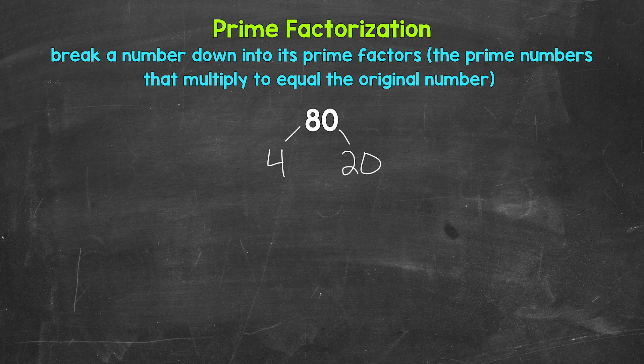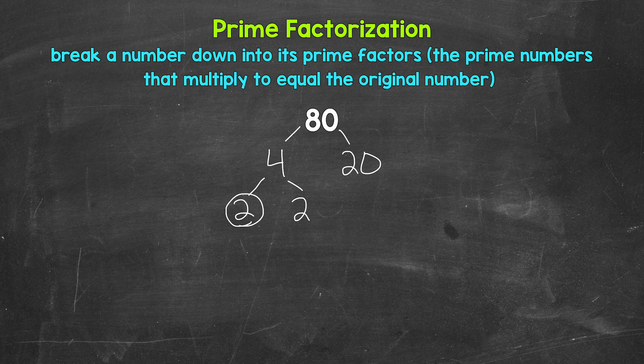Now let's continue to break this down. We have 4 and 20, which we can break both of these down further. Let's start with 4 — we need factors of 4. We know 2 times 2 is 4, so 2 is a factor of 4. Let's break 4 down into 2 and 2. Now 2 is a prime number, so we are done here and here — we can't break those down any further.